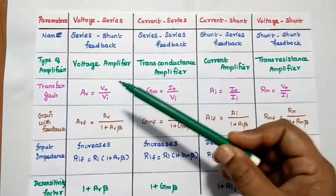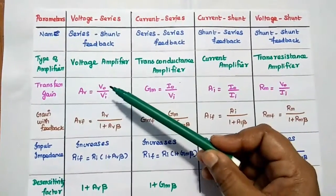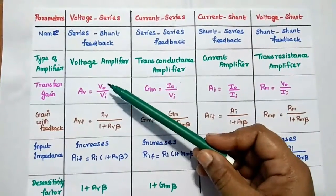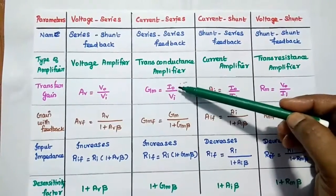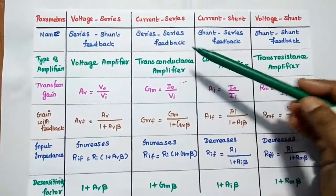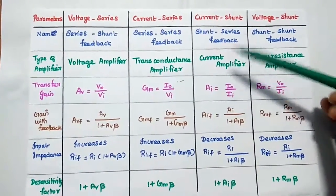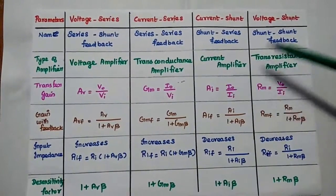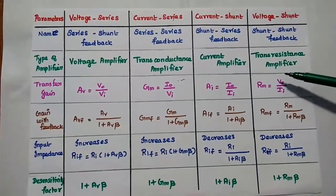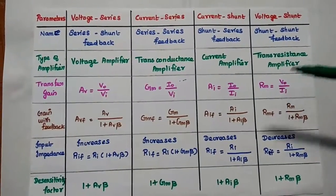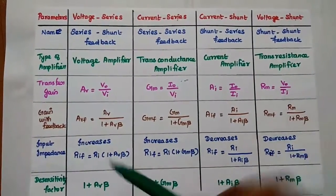For voltage series, the output is voltage. For current series, the output is current. For current shunt, the output is current. For voltage shunt, the output is voltage. The input is voltage for voltage series and current series, and current for current shunt and voltage shunt.